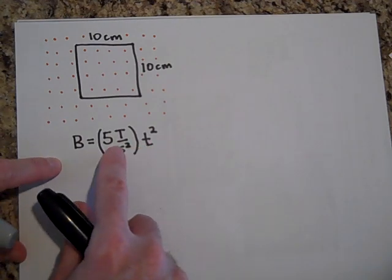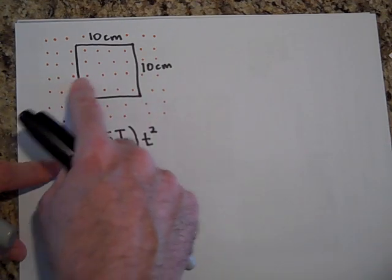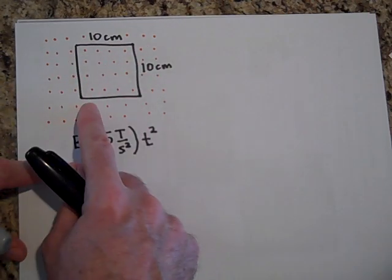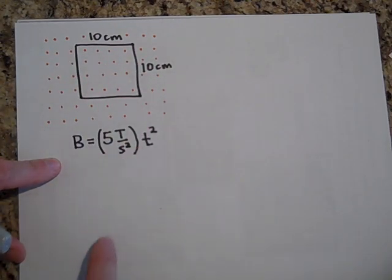At one second, it's five Teslas, but it's five Teslas everywhere. So that's why I'm saying the field is always uniform, but it's not constant. It's changing with time.